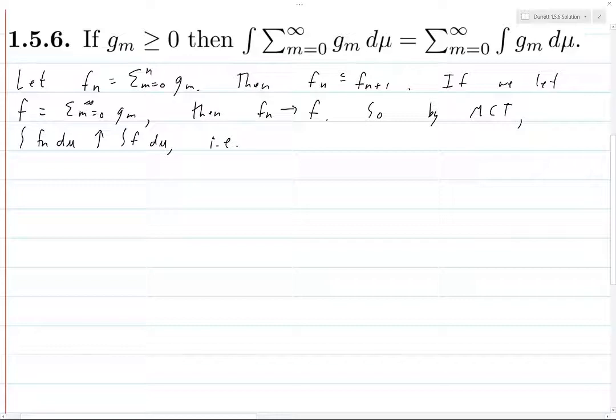If we write out what this actually means, we're writing the integral of F dμ, which is precisely the integral of the sum from m equals zero to infinity of g_m dμ. So this is equal to the integral of F dμ,